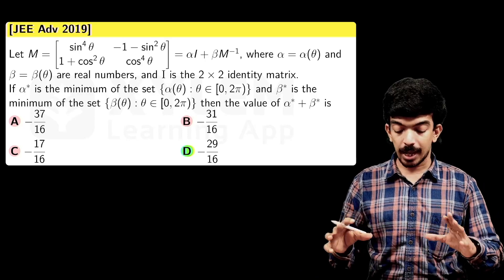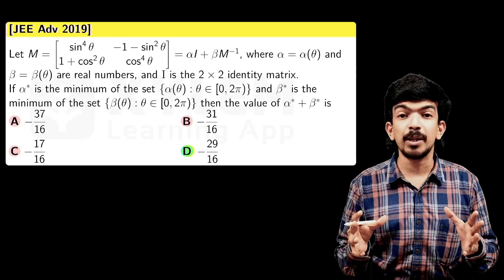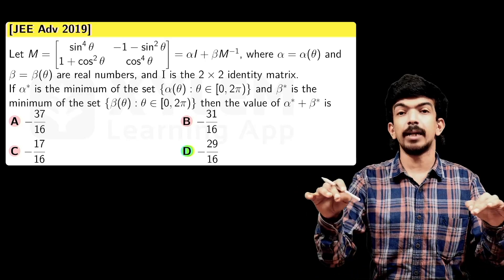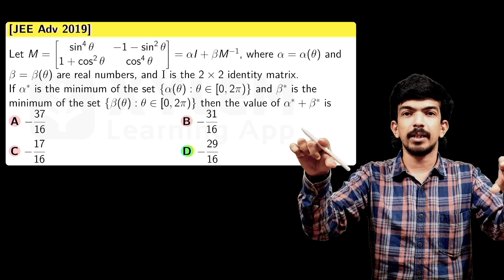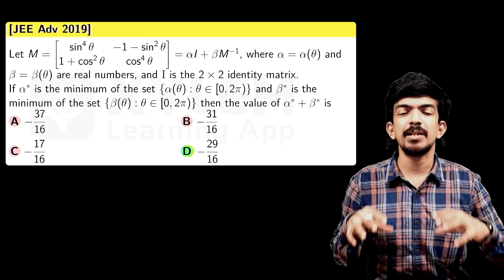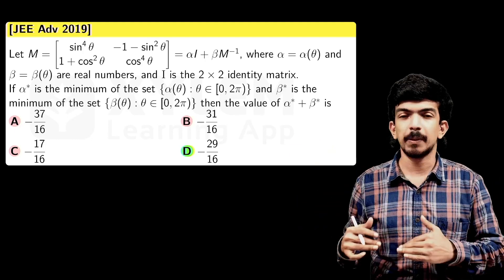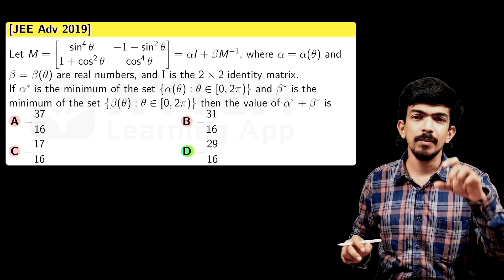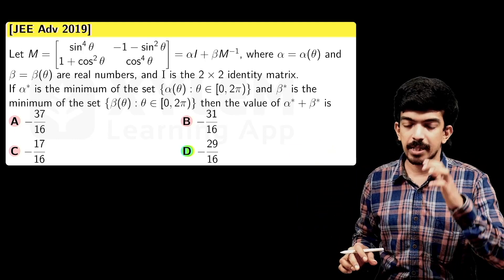So β* = −37/16. Therefore α* + β* = 1/2 + (−37/16) = 8/16 − 37/16 = −29/16. The answer is −29/16.